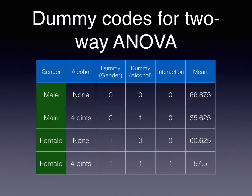There's another reason why we describe this as a two-by-two or two-times-two design — that's exactly how we write it out. For males who had no alcohol: their gender dummy code is zero and their alcohol dummy code is zero, so the interaction dummy code is zero times zero equals zero. For men who had four pints: gender dummy code is still zero, alcohol dummy code is one, and zero times one is zero for the interaction. For women with no alcohol: gender dummy code is one, alcohol dummy code is zero, and one times zero is zero.